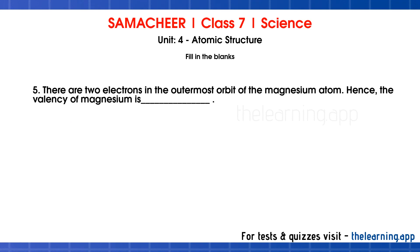Fifth question: there are two electrons in the outermost orbit of the magnesium atom; hence, the valency of magnesium is dash. Correct answer is 2. The electrons in the outermost orbit of an atom determine its valency. Since magnesium has 2 electrons in its outermost orbit, its valency is 2.